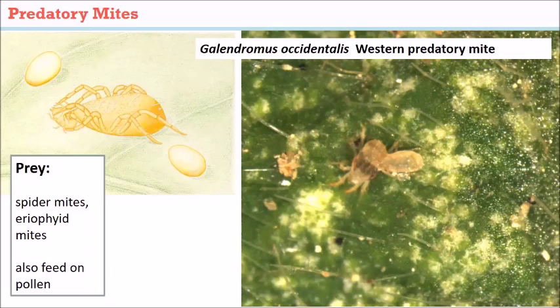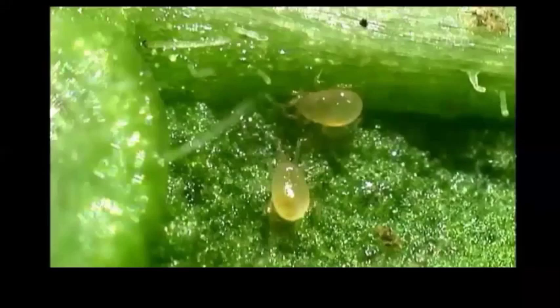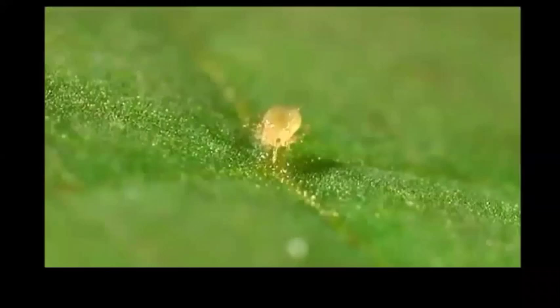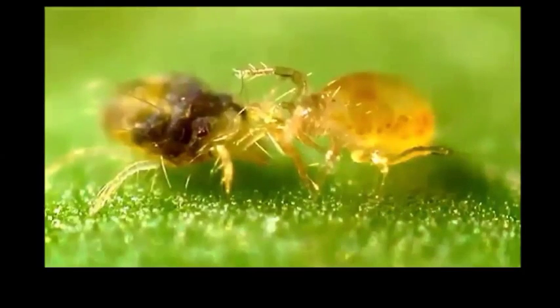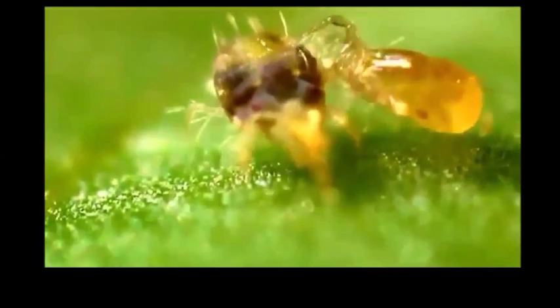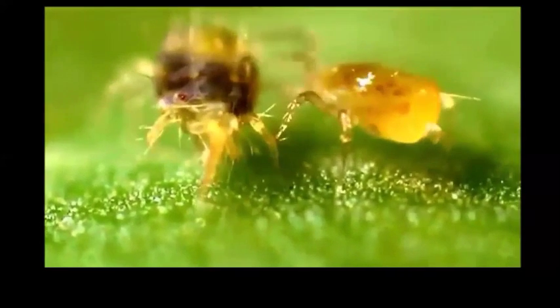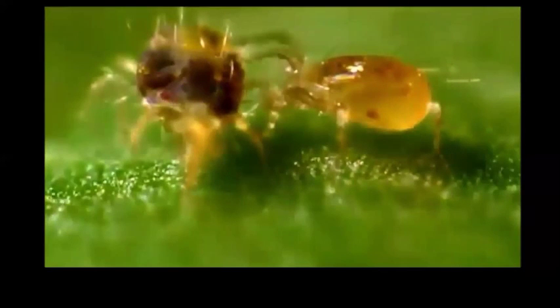Predatory mites — specifically Galendromus — are very important, as already discussed. Managing orchard practices to prevent spider mites from moving up into the tree lets Galendromus do their work where spider mites are down in the ground cover. Predatory mites are pear-shaped and easier to identify: they move quickly through a spider mite colony, whereas pest mites just sit there. Pest mites are more oval-shaped and have that two-spotted appearance.